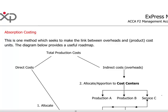Absorption costing is a method in which all manufacturing costs — whether they are direct or indirect, or variable and fixed — are treated as product costs. Non-manufacturing costs, that means selling and general administrative expenses, would be treated as period costs.